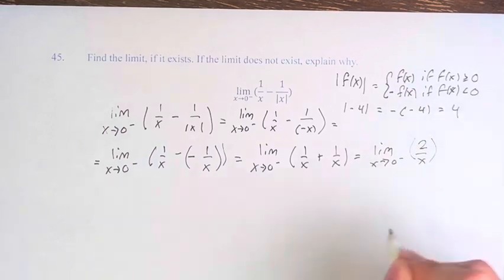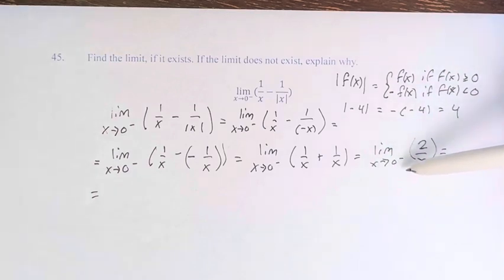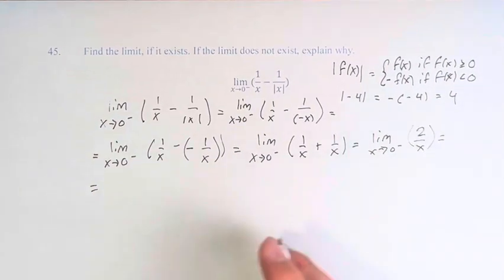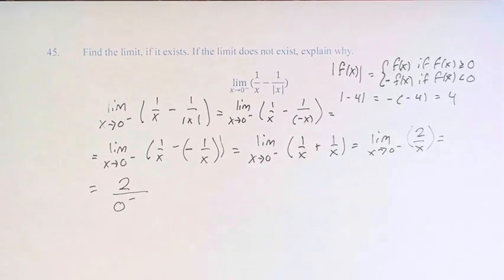Now, we've done all the simplifying we can, and we just have to understand what it means to be dividing by 2 over x. Because, of course, we still can't divide by 0. But we have to think about what it actually means to be approaching 0 from the left. So this is 2 over 0 from the left.